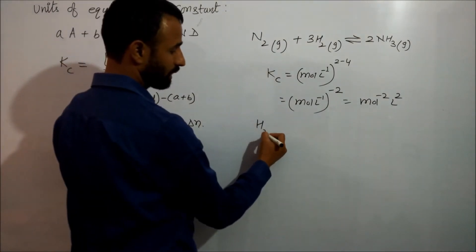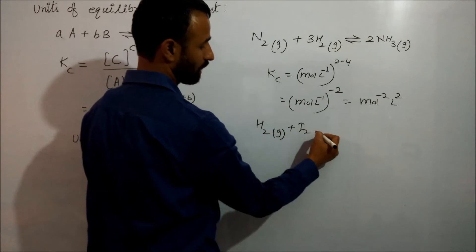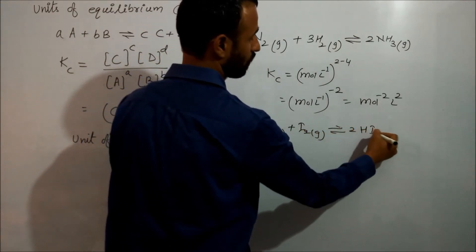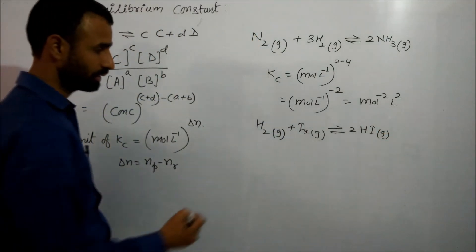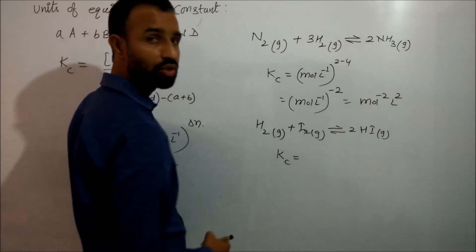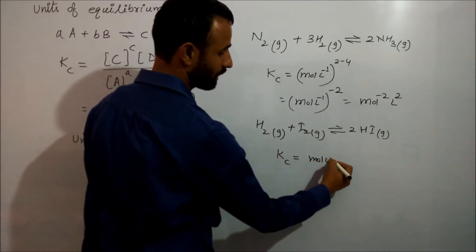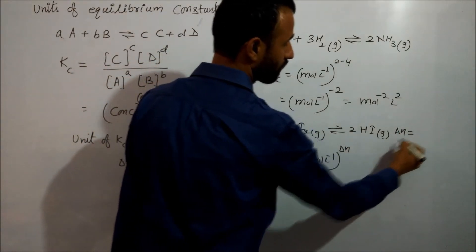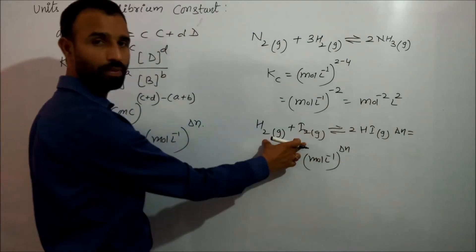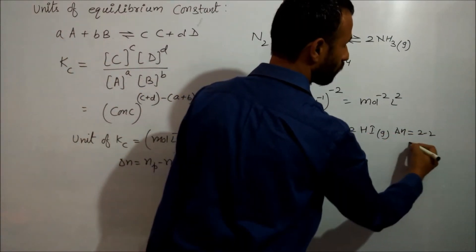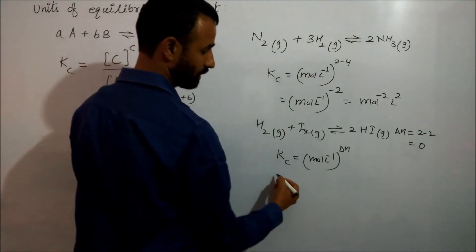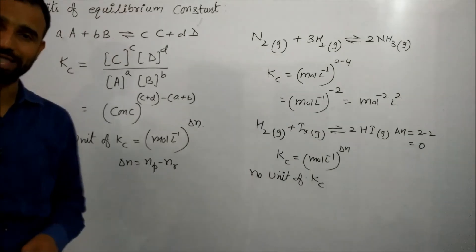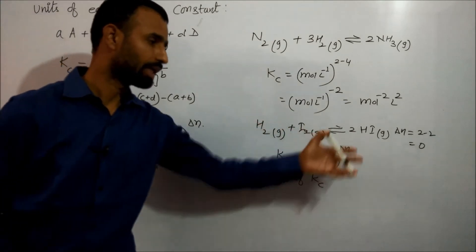If we have a reaction like H2 gas plus I2 gas to give 2HI gas, Kc has no unit because in this case mole per liter raised to power delta N, and delta N is equal to 2, and this is also 2, so 2 minus 2 is 0. That means no unit of Kc if delta N is 0.